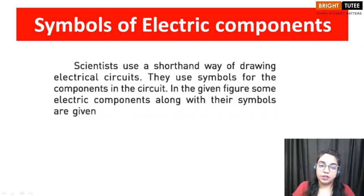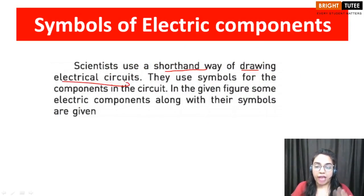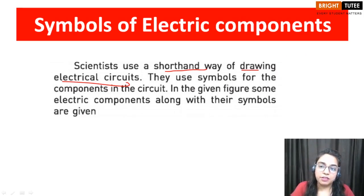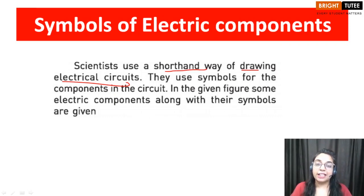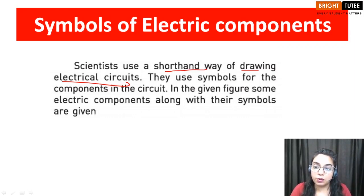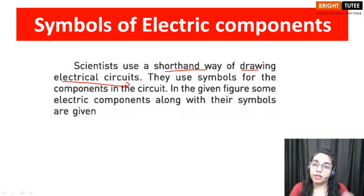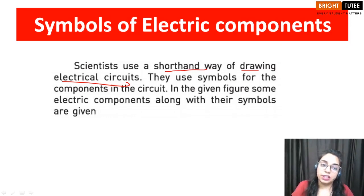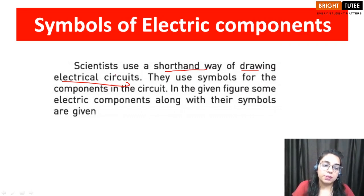Scientists use a shorthand way of drawing electrical circuits. Just as in chemistry we have small symbols for different elements — for example, calcium is written as Ca, magnesium as Mg — these symbols help us write things in short form because it would be a long, tedious process to write everything again and again. Similarly, in physics we use different shorthand symbols to create electrical circuits neatly and clearly.